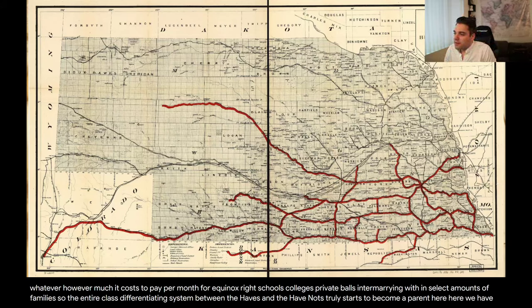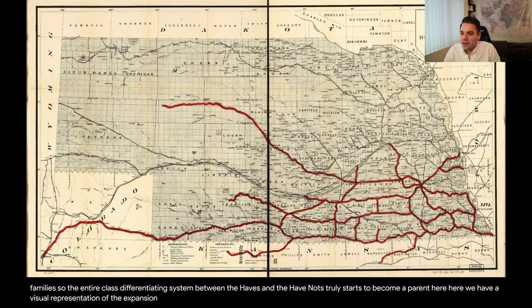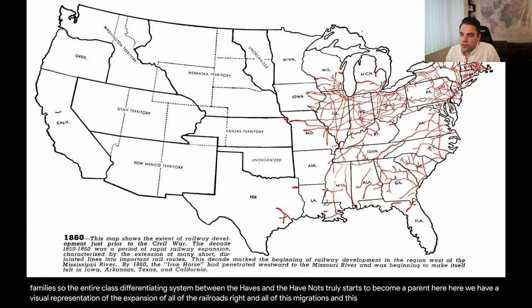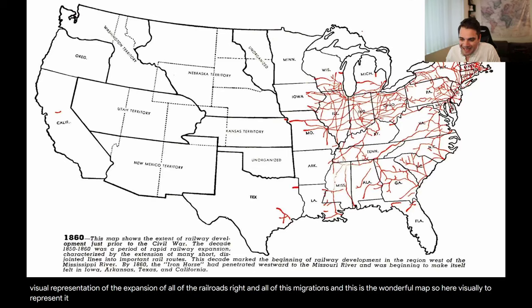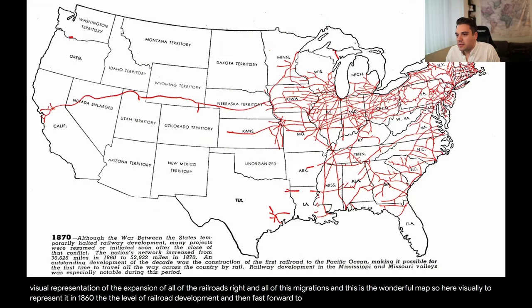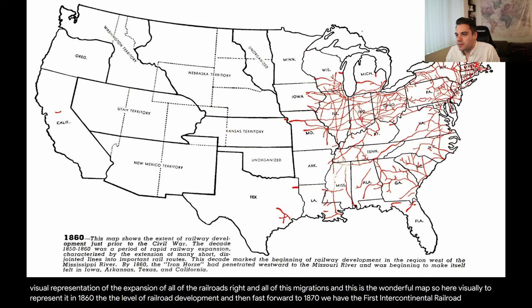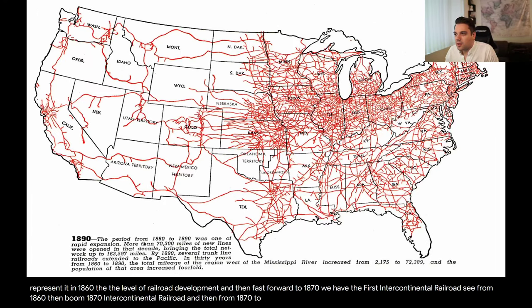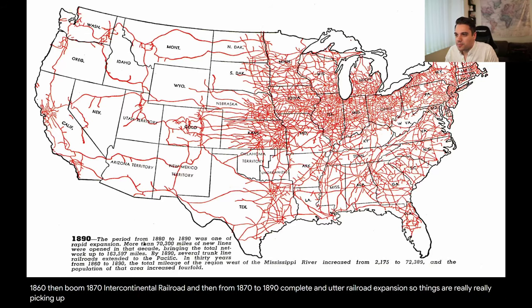Here we have a visual representation and a wonderful map of the expansion of the railroads and migrations. In 1860, you can see the level of railroad development. Fast forward to 1870, we have the first intercontinental railroad. Then from 1870 to 1890, complete and utter railroad expansion. Things are really, really picking up at this point — life is truly accelerating.